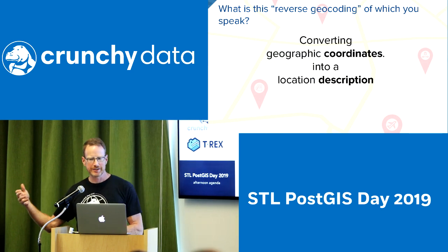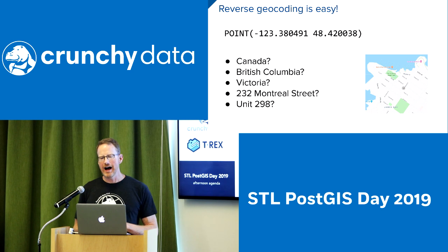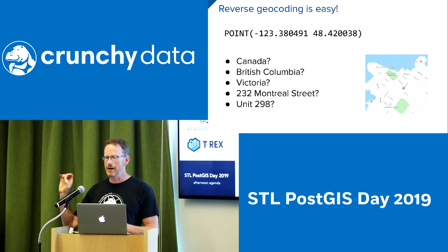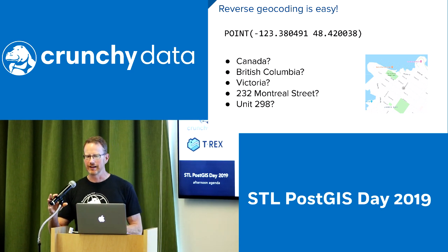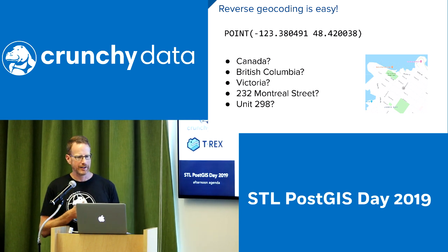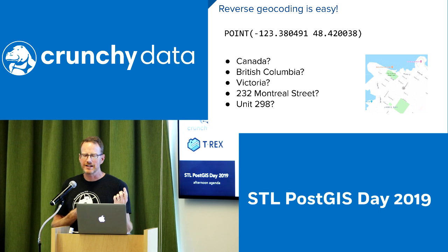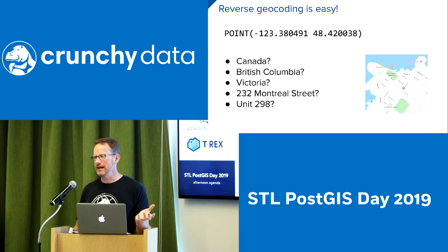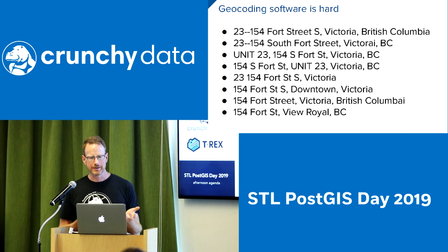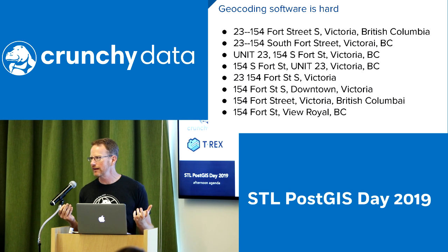There's this idea of reverse geocoding, which is easier. Reverse geocoding takes coordinates and turns them into a description. It's easy in that you can drop a geographic point through various layers of locations and tell you about that point. But it really becomes difficult with the problem of definition — am I talking about Canada? British Columbia? Victoria? 232 Montreal Street? Unit 298? As you get finer and finer, the possibilities for disambiguation go up. Gray areas are the bane of all geocoding problems.